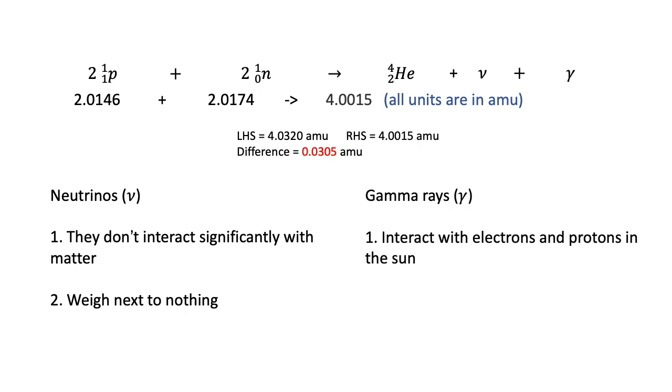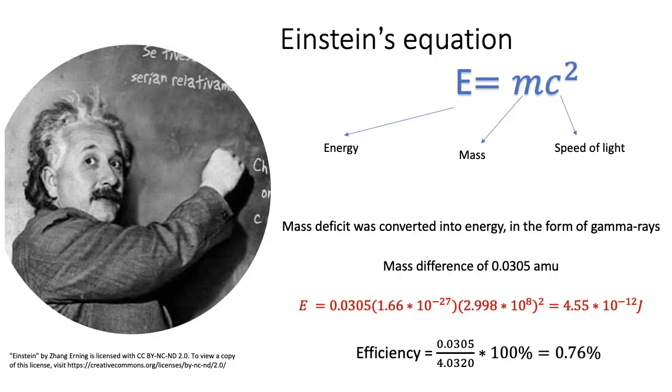Gamma rays, on the other hand, do interact with electrons and protons in the sun, and this interaction liberates energy in the form of heat, which will increase pressure so that the sun does not collapse. So, as you can see, the mass deficit was converted into energy, in the form of gamma rays.